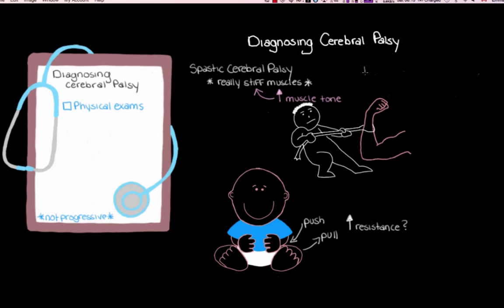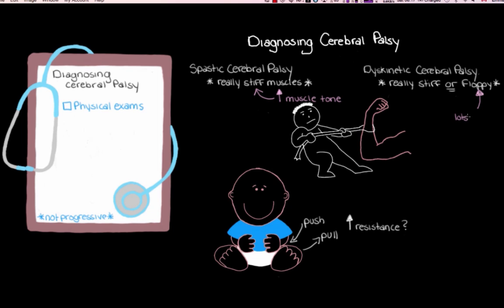In another type — dyskinetic cerebral palsy — muscle tone can actually fluctuate. Sometimes it's very high and the muscles are stiff, but at other times the tone can be very low and the muscles feel really floppy. If we noticed floppy muscles during examination, we might consider dyskinetic cerebral palsy. However, because it's much less common than spastic cerebral palsy, and because there are many other causes of decreased muscle tone — like muscular dystrophy, Down syndrome, or certain infections — we'd want to rule those out first.